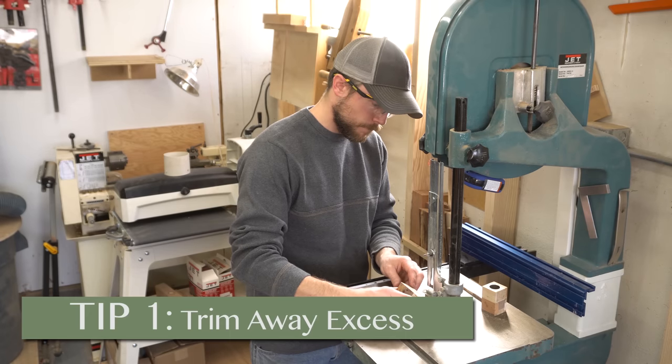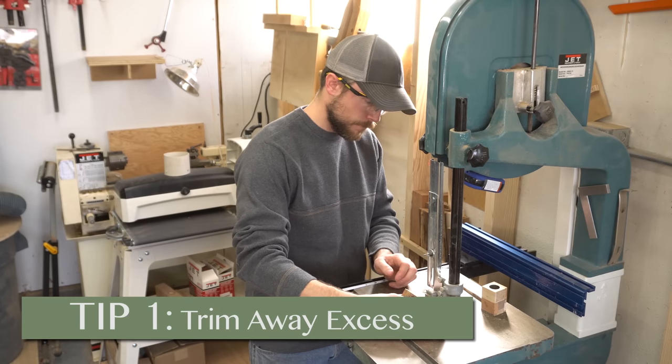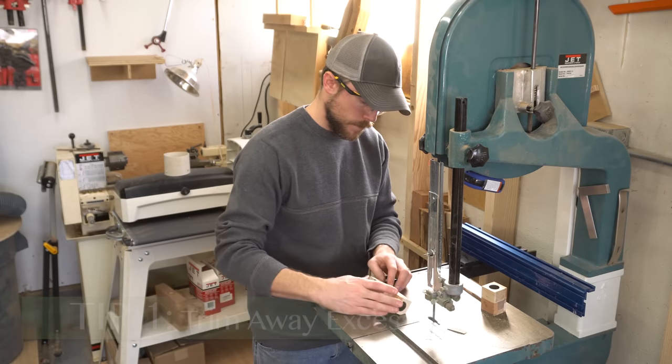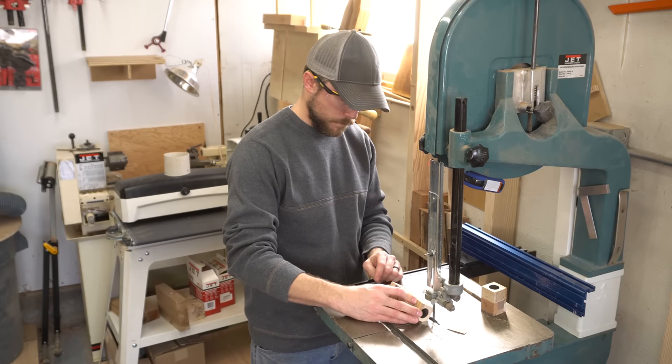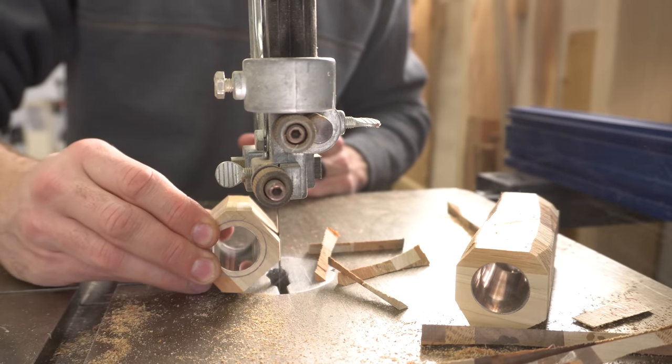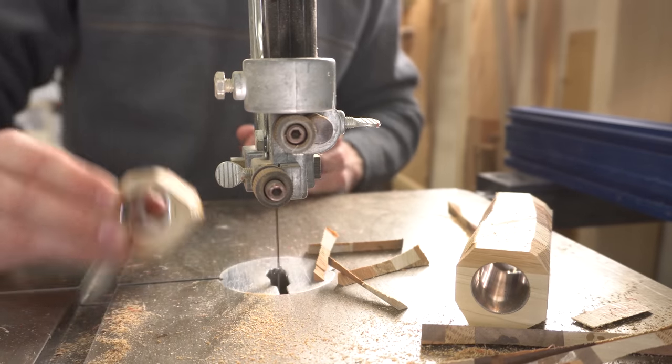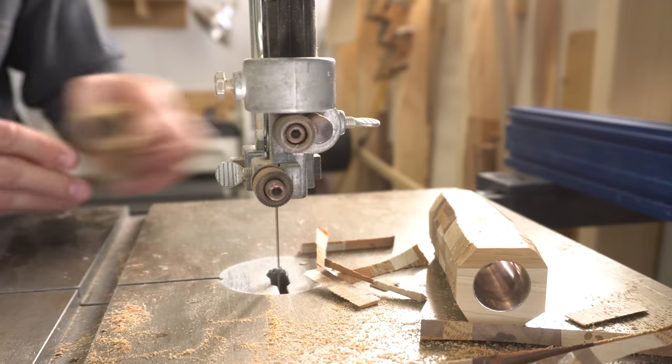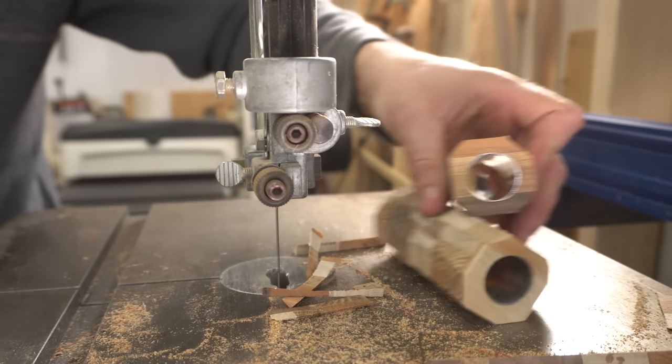This brings us to tip number one, trim away the excess. Trying to turn the square blanks to round and removing that much material all on the lathe is just inviting more opportunity for something ugly to happen. By trimming away the corners first, you're not only removing excess material, but it's that crucial corner material that will make the most violent contact with your turning tools.